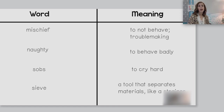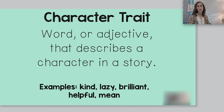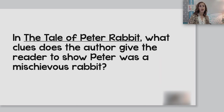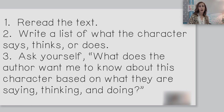Before we begin returning to our tale about Peter Rabbit and his adventure in Mr. McGregor's garden, let's review what character traits are. A character trait is a word or adjective that describes a character in a story. Some examples are kind, lazy, brilliant, helpful, and mean. To determine a character's traits, we first find evidence in the text that shows a character's thoughts, words, or actions. Then we think, how would I describe the character based on what they are thinking, saying, and doing? As I read The Tale of Peter Rabbit, I'm going to think: what clues does the author give the reader to show that Peter was a mischievous rabbit? Good readers focus on vocabulary and the clues authors give us about a character's traits.